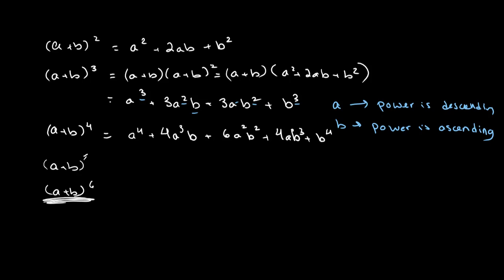One thing you start to notice when you put together all the coefficients is that for different powers of a plus b, there's a pattern. For a plus b to the power of 1, the coefficients are 1 and 1. For a plus b squared, the coefficients are 1, 2, 1. For a plus b cubed, the coefficients are 1, 3, 3, 1.